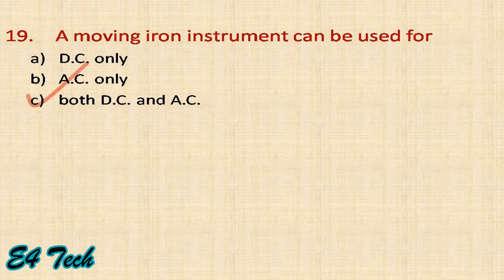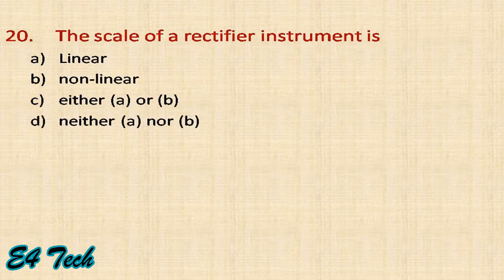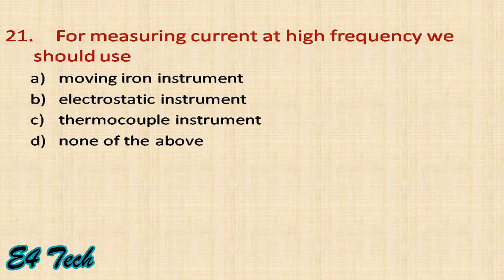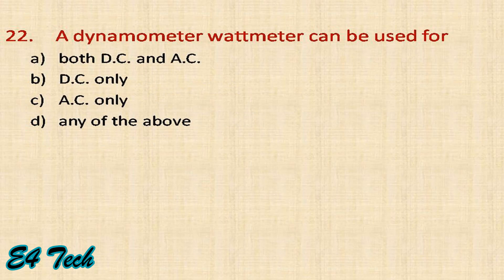A moving iron instrument can be used for both AC and DC. The scale of a rectifier instrument is always linear in nature. For measuring current at high frequency, we should use thermocouple instruments. A dynamometer wattmeter can be used for both AC and DC measurement.